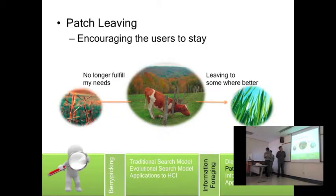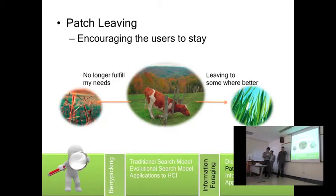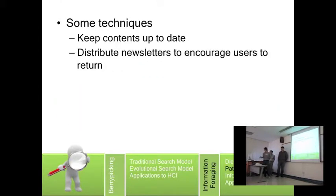Patch living is a concept to ensure that a user stays on your website. There are two ways a user will leave: one is that your website no longer fulfills their needs. The second is related to the cost-benefit assessment — when the user finds that the cost of the current information patch outweighs the benefits you give, the user will likely leave. Some techniques to encourage users to stay include keeping your content up to date — the content also has to be substantial and not full of rubbish — and distributing a newsletter to remind them to come back.